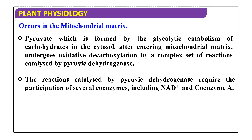The reactions catalyzed by pyruvic dehydrogenase — this is an enzyme — require the participation of several coenzymes. Along with this enzyme, pyruvic dehydrogenase, we need several coenzymes, including NAD+ and coenzyme A. So two coenzymes are required: NAD+ and coenzyme A.